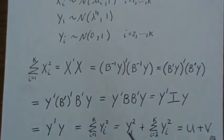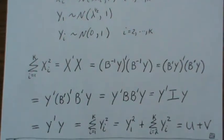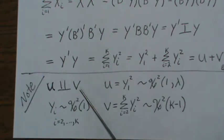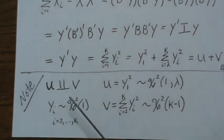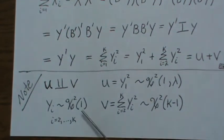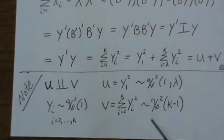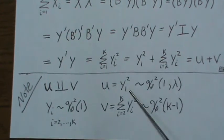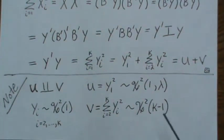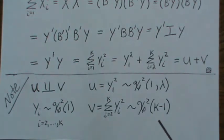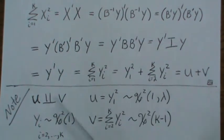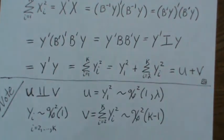Letting u = y1² and v = the sum of yi² for i=2 to k, we know they are independent because the variance-covariance matrix of the y's is the identity matrix. Each yi for i≥2 is chi-squared(1), so their sum v is chi-squared(k-1). And from an earlier video, y1² is a non-central chi-squared. So this result is important when we derive the general non-central chi-squared distribution — we model it from these two independent components.